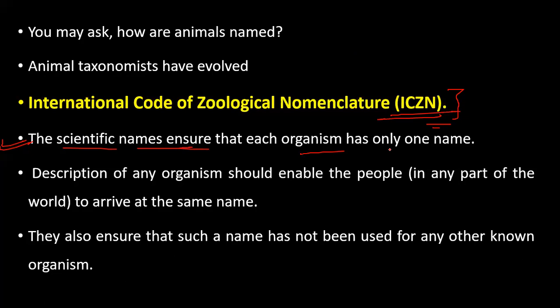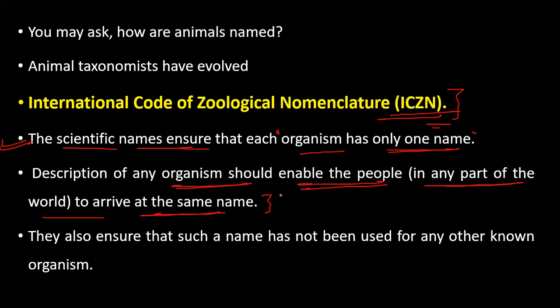Scientific names ensure that each organism has only one name. The description of any organism should enable people in any part of the world to arrive at the same name through characterization, identification, and record.